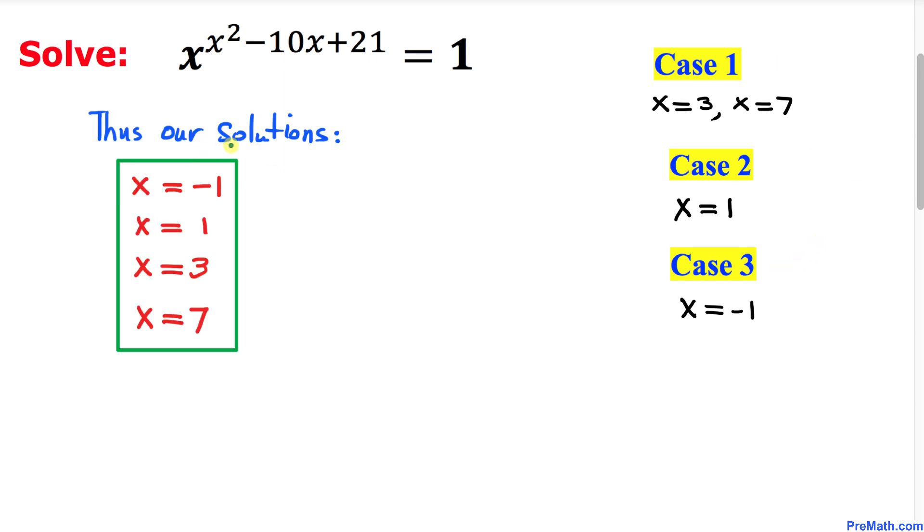Thus our complete solution turns out to be x equal to negative 1, x equal to positive 1, x equal to 3 and x equal to 7. And that's our final answer.